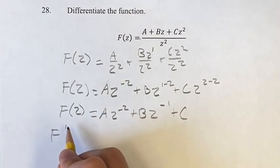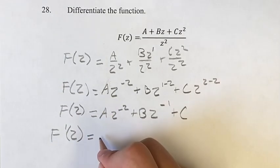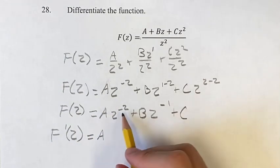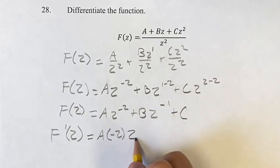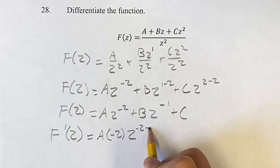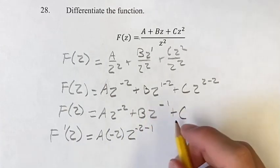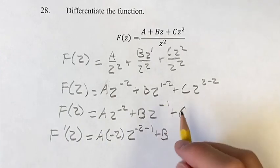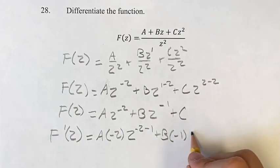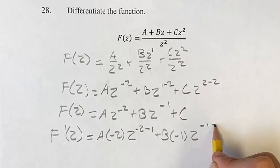Now to find our derivative, we use our power rule. For the first term, the coefficient is a — we bring the exponent down into the coefficient and the new exponent is the old one minus 1. Same thing for the second term: plus b, bring down the exponent times negative 1, times z to the old exponent minus 1.